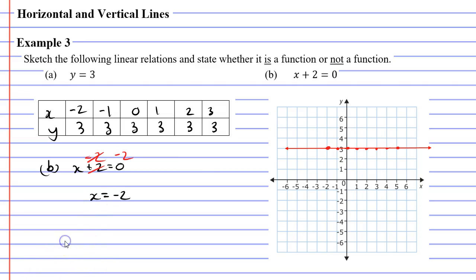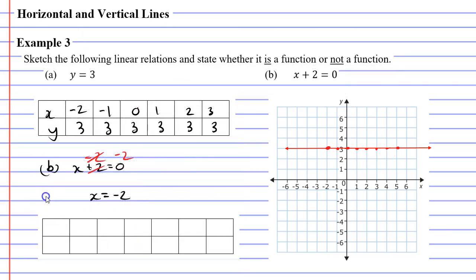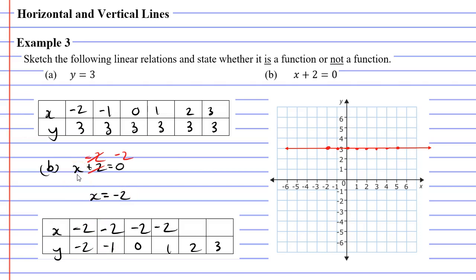I'm going to subtract 2 on both sides and now I have x equals negative 2. Once again let's use a table of values to illustrate what's happening here. This time rather than writing down some random x values, I'm going to write down some y values: negative 2, negative 1, 0, and so on. If y is negative 2, what does x equal? Well x equals negative 2. When y is negative 1, x equals negative 2. It doesn't matter what the y value equals, x will equal negative 2 every time.